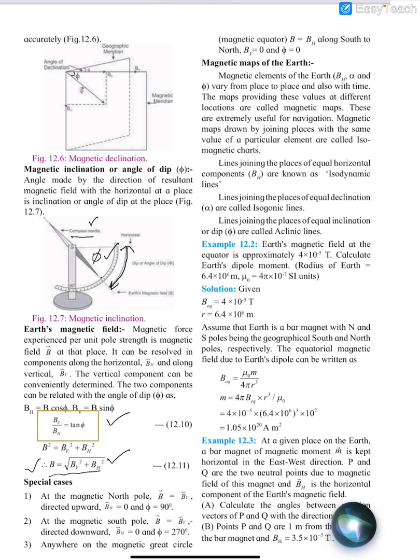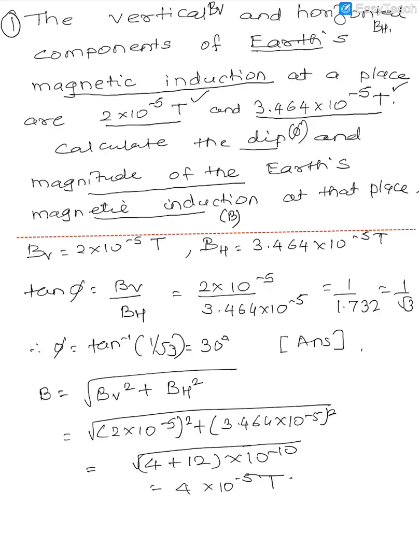So tan phi is Bv by Bh and B is under root of Bv square plus Bh square. So tan phi is Bv by Bh, and the value of Bv upon Bh is this divided by this, which is 1 upon 1.732, which is 1 by root 3. We know that tan of 1 by root 3 is 30 degrees, so phi becomes tan inverse 1 by root 3, which is 30 degrees.